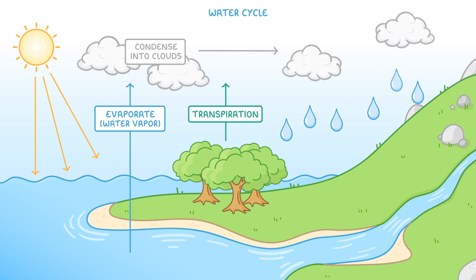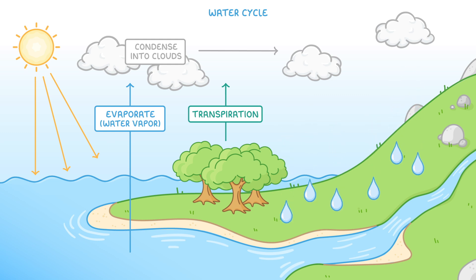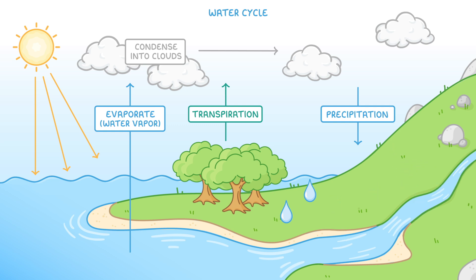At some point though, the water will fall back down to earth as a liquid, in the form of rain. The technical name for this process is precipitation. So now that the water has fallen back to earth, it could seep into the soil, flow into rivers, or be taken up by plants. And then this whole cycle can repeat all over again.